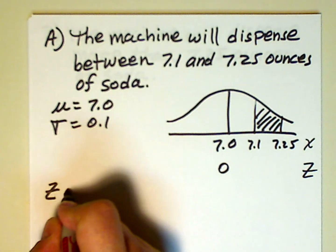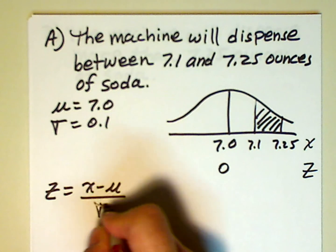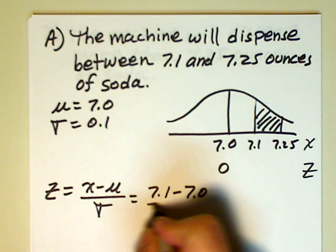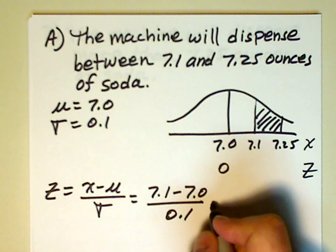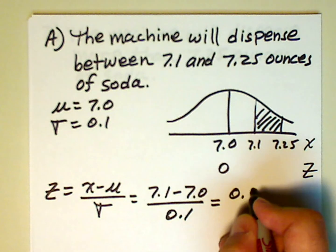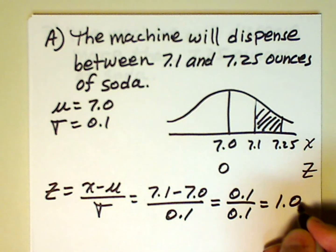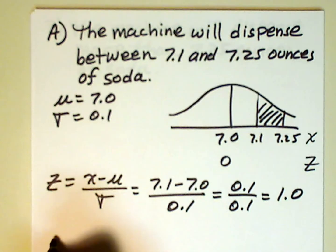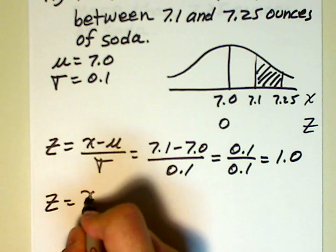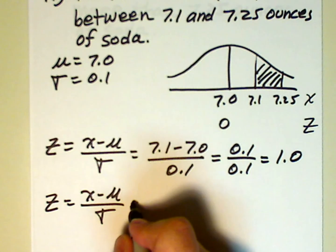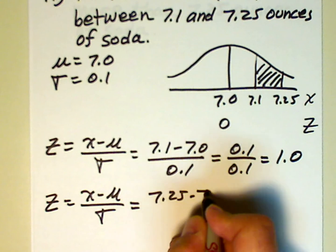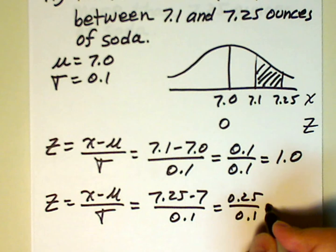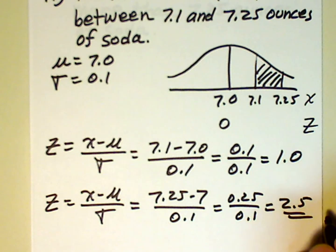We're going to use the formula z equals x minus mu over sigma. We know that x in the first case is 7.1, mu is 7, and sigma is 0.1. This is equal to 0.1 over 0.1, which is 1.0. For the second value, z equals x minus mu over sigma: 7.25 minus 7 over 0.1, and that's 0.25 over 0.1, which comes to 2.5.